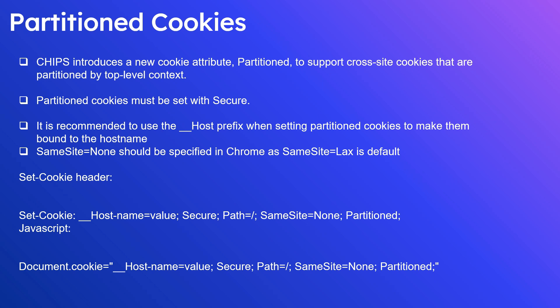Partitioned cookies may not solve all use cases — in some cases you may need unpartitioned cookies. The Shared Storage API and Related Website Sets are other ways to use unpartitioned cookies across different sites instead of using CHIPS partitioning. You can use the Storage Access API and Related Website Sets when you want the same cookie to be accessible to a service embedded in multiple related sites.